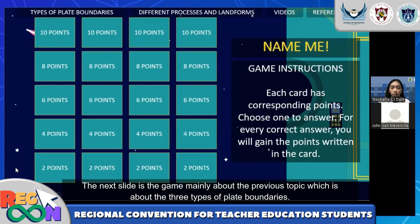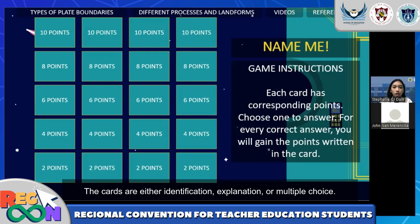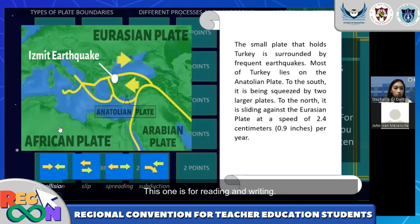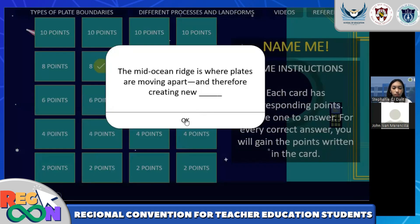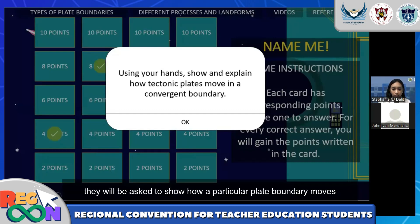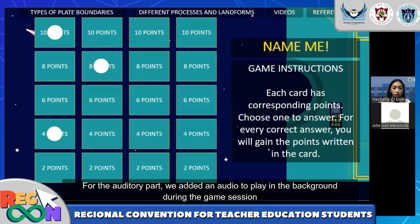The next slide is again mainly about the previous topic, which is about three types of plate boundaries. The class will be divided into four groups and each card has corresponding points. The students have the freedom to choose which card they will answer. The cards are either identification, explanation, or multiple choice. We use the VARK model as a guide to the scheme — one type for visual, one for reading and writing, one for kinesthetic where they will be asked to show how a particular plate boundary moves, and for the auditory part, we added audio to play in the background.